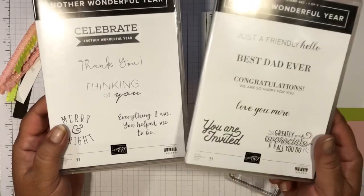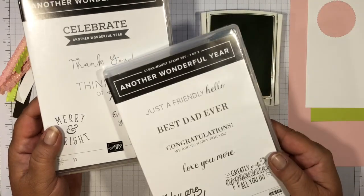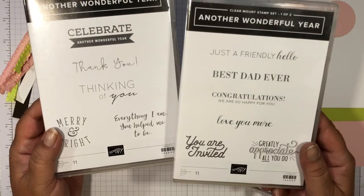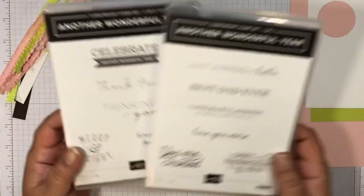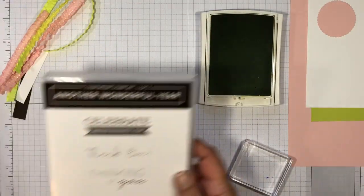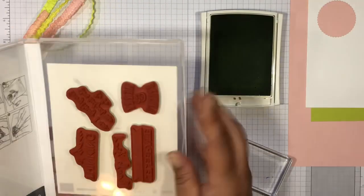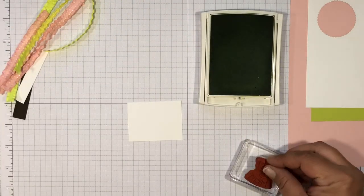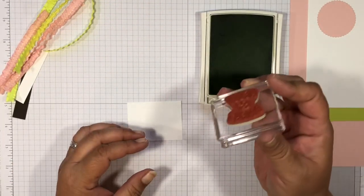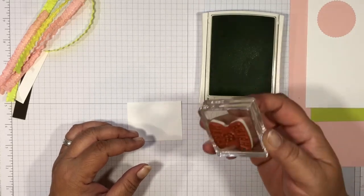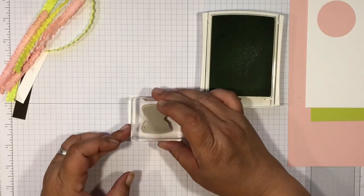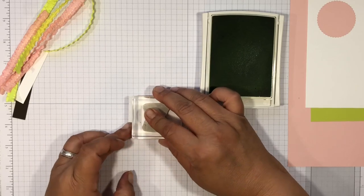It's a great set to start off because it has a Christmas one, you can use it for Thanksgiving, birthday, a friend, hello, thank you. We're going to use this Merry and Bright. I'm using our C block and I'm going to ink that up and then just right in the middle there.